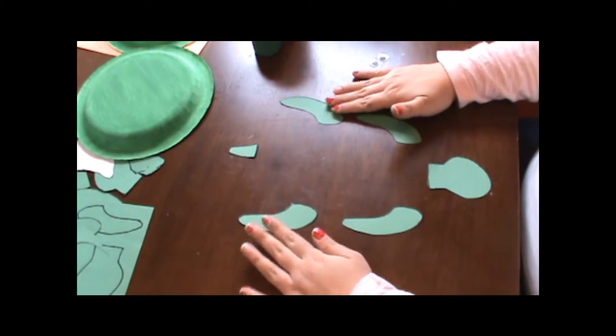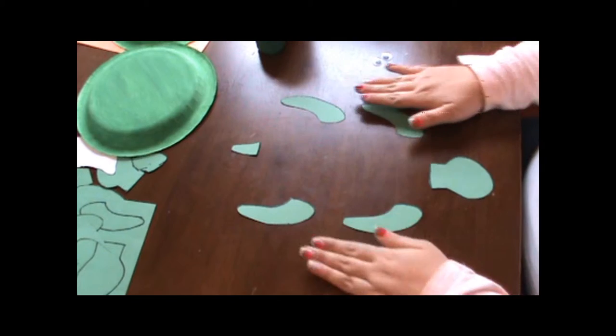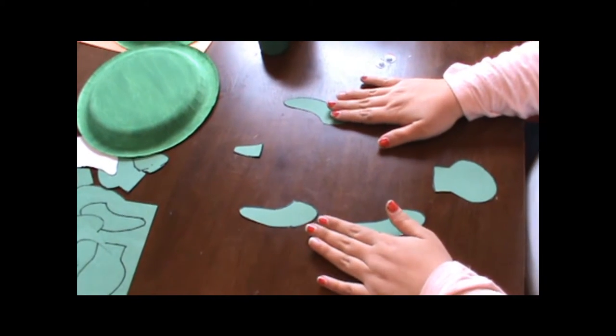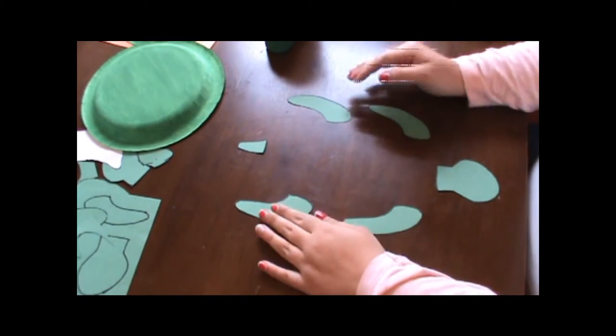When you are finished cutting out all of your parts, lay them out like this. Make sure you have the flippers that belong on the right on the right and flippers that belong on the left on the left.